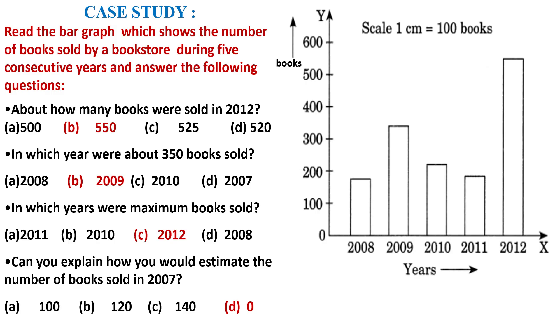Here is the question. Read the bar graph which shows the number of books sold by a bookstore during five consecutive years and answer the following questions. This bar graph is a complete story of a case. Right now, on the x-axis, years and on the y-axis, books.